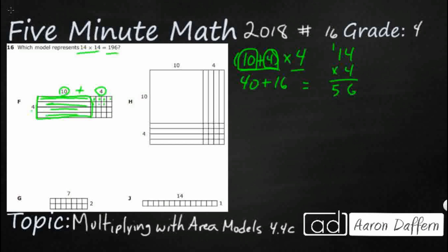So you get your 40, you get your 16. As we can see, it makes 56. We don't need 56, we need 196. So that's how an area model works, and F is not correct.